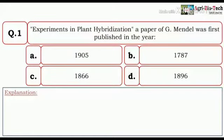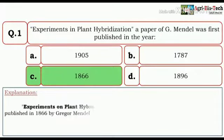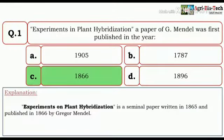A paper of Mendel was first published in the year 1905, 1787, 1866, and 1896. And here the correct answer is 1866. Experiments on plant hybridization is a seminal paper written in 1865 and published in 1866 by Gregor Mendel.